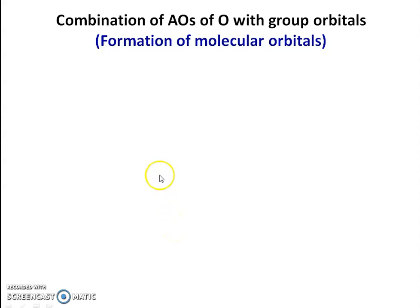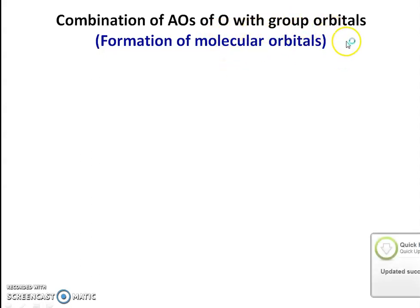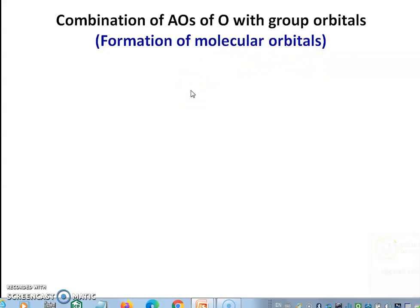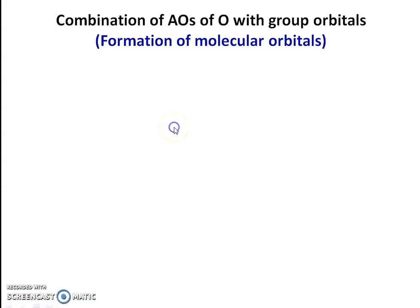The next point is the combination of atomic orbitals of oxygen with the group orbitals formed by the peripheral hydrogen atoms. The peripheral hydrogen atoms form two group orbitals, ψ1 and ψ2, and these combine with suitable atomic orbitals of oxygen. There are five molecular orbitals formed in water total. Let us discuss them one by one.